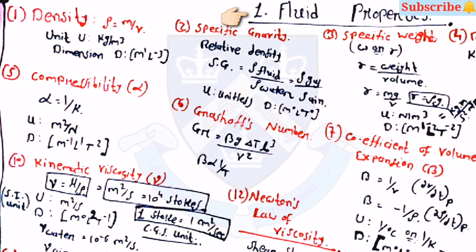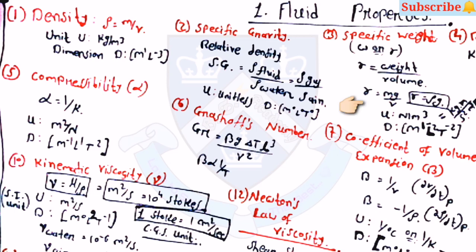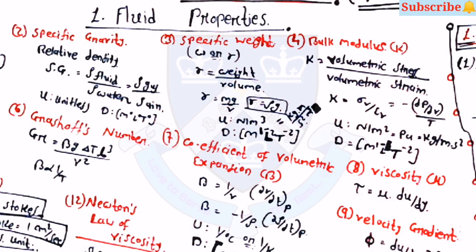The first topic is fluid properties. For fluid properties there are some properties for which you have to remember the equations as well as their MLT dimensions. The first one is density, which is equal to m by v, and the dimension for density is m1 l-minus-3. For specific gravity, the dimension is m0 l0 t0. For specific weight, gamma is equal to weight by volume, so gamma equals mg by v, which equals rho into g.